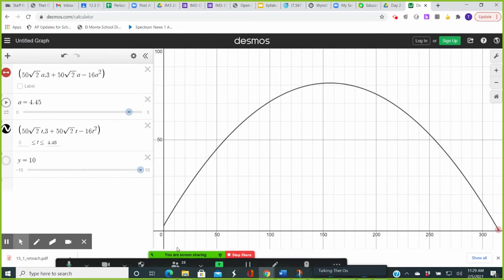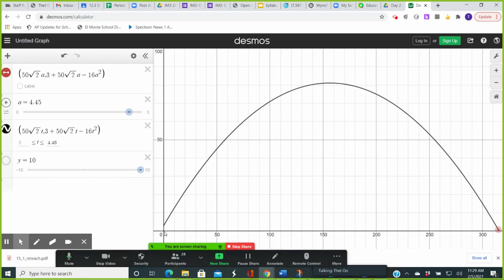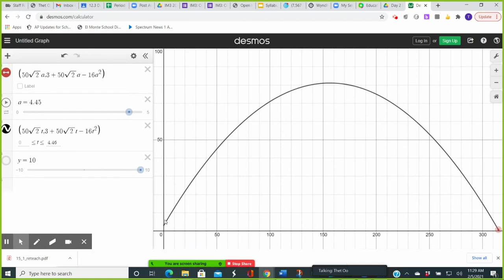In this problem, the problem is not asking you to find the range of the baseball, but if it were, what does the range mean? It means how far the ball travels horizontally when it lands on the ground.